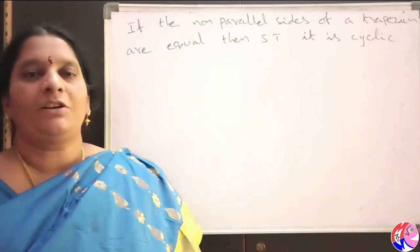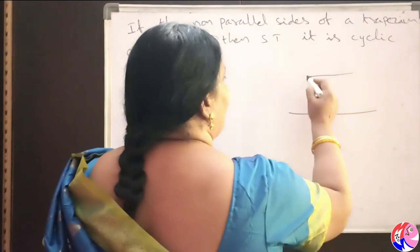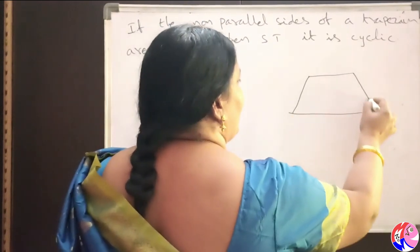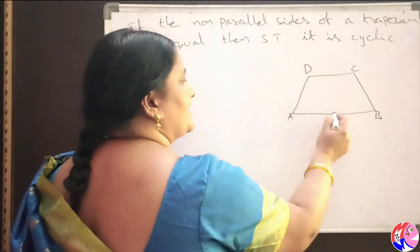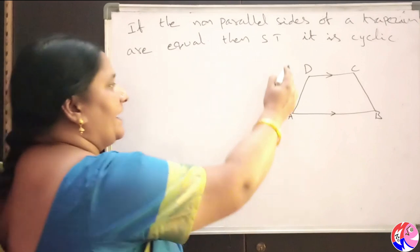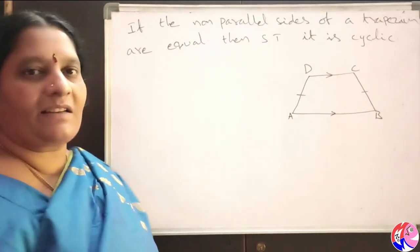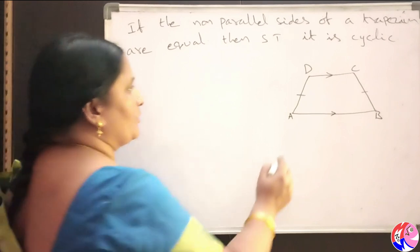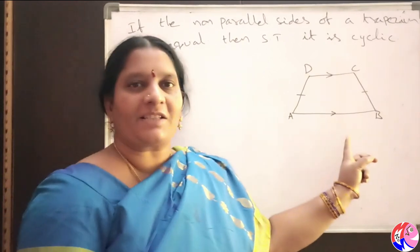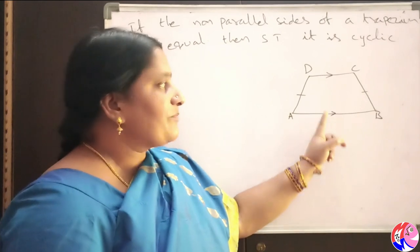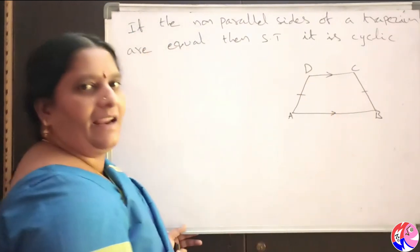Non-parallel sides of a trapezium are equal — show that it is cyclic. Take a trapezium ABCD. In this trapezium ABCD, AB and DC are called the parallel sides, and AD and BC are called the non-parallel sides. As per the problem, these non-parallel sides are equal, so AD equals BC. We are required to prove that ABCD is a cyclic quadrilateral, which means we need to prove that opposite angles are supplementary — angle B plus angle D equals 180 degrees.